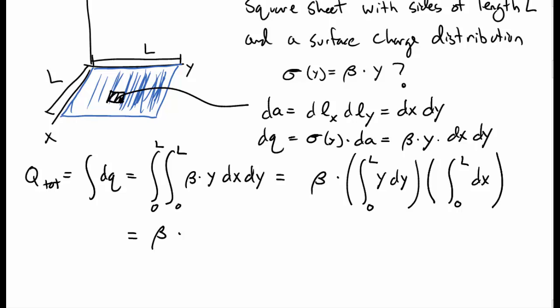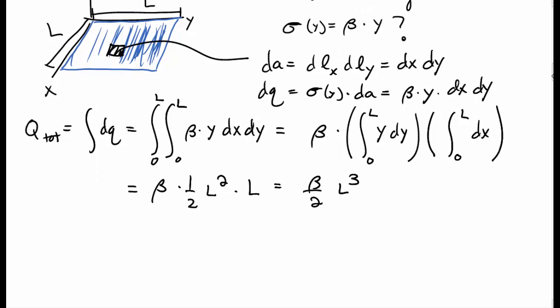Again, easy integrals to do. We just have beta times 1 half l squared times another factor of l. Or, all together, beta over 2 l cubed. Now, it would be nice to check the units, but we don't really know the units of beta. We weren't really told the units of beta. It's just some quantity. Just some constant. So, maybe let's first think about what the units of beta are from what we were told at the beginning.